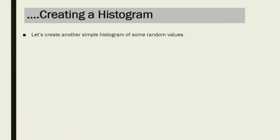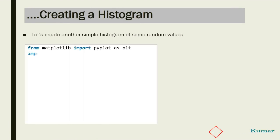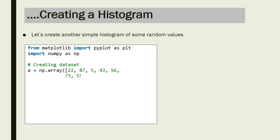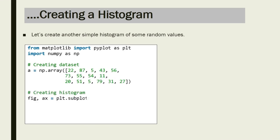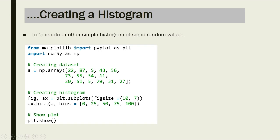Let's create another simple histogram of some random values. We write: from matplotlib import pyplot as plt — this is another way to import Matplotlib. We also use the NumPy library to create an array: import numpy as np. Then we create a dataset: a = np.array() with values such as 22, 87, 5, 43, 56, and more stored in the array.